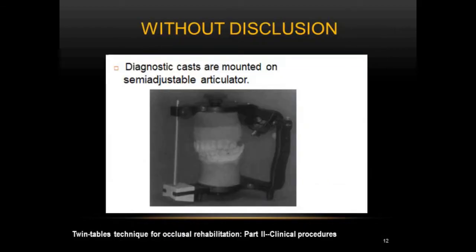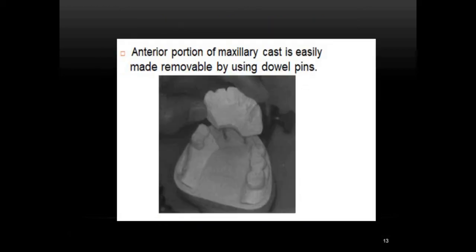First, diagnostic casts are mounted on an Arcon-type semi-adjustable articulator with a box-type fossa, to mimic the working condylar path. The casts are mounted using the face bow record and the centric relation record. The maxillary cast is made with the anterior portion removable using double pins. This is because the anterior teeth create posterior disclusion, and when waxing the occlusal morphology of the posterior teeth, the anterior guidance becomes an obstacle. Removing the anterior segment allows posterior morphology to be completed without that obstacle.